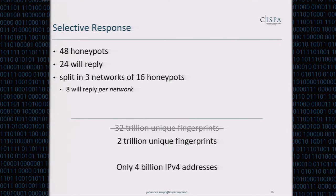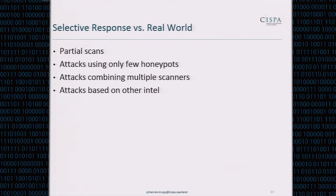So basically every scanner can have a unique fingerprint. But in the real world things are not always as nice. Scanners could only scan parts of our network, or attacks could use only a few of the honeypots found, or attacks could combine multiple scan results from multiple scanners, or they could have their intelligence from somewhere else entirely that we did not consider.